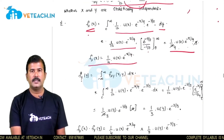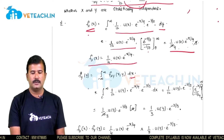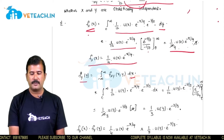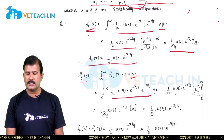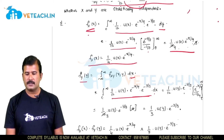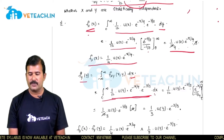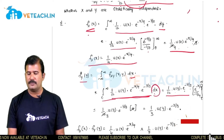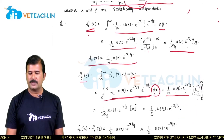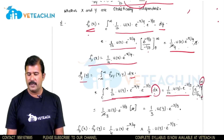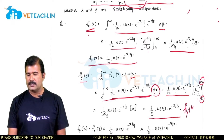Similarly, find the marginal density function in y, f_y(y), by integrating the joint density f(x,y) with respect to x from 0 to infinity. Since integration is with respect to x, u(y) · e^(−y/3) and the constant 1/12 are treated as constants. Integrating e^(−x/4) gives e^(−x/4) / (−1/4), with limits from 0 to infinity. Substituting these limits, we get f_y(y) = (1/3) · u(y) · e^(−y/3) as the marginal density function in y.